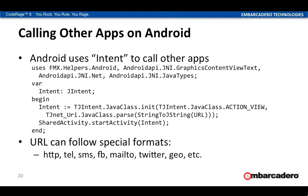Here is the source code you would use. I have example code that wraps this into a method you can call without worrying about it every time. One interesting thing in here: you're using ACTION_VIEW. There are quite a few other actions available — for example, you can tell it to dial the phone directly and not just display the number in the phone dialer. It's worth checking out some of the other options available.